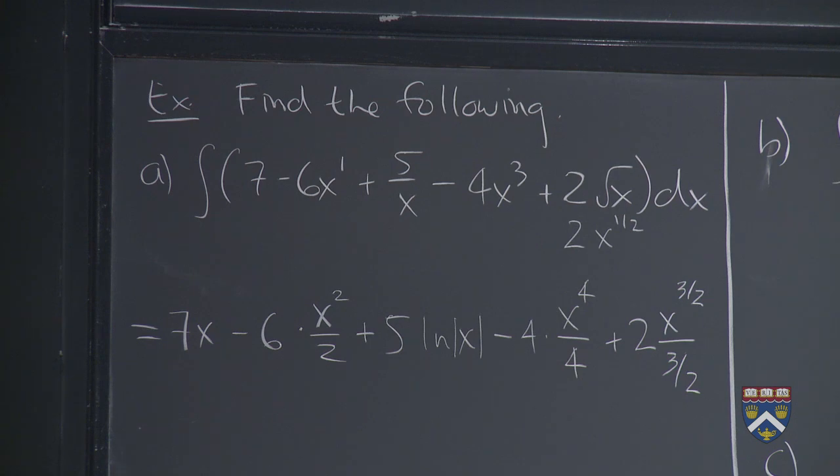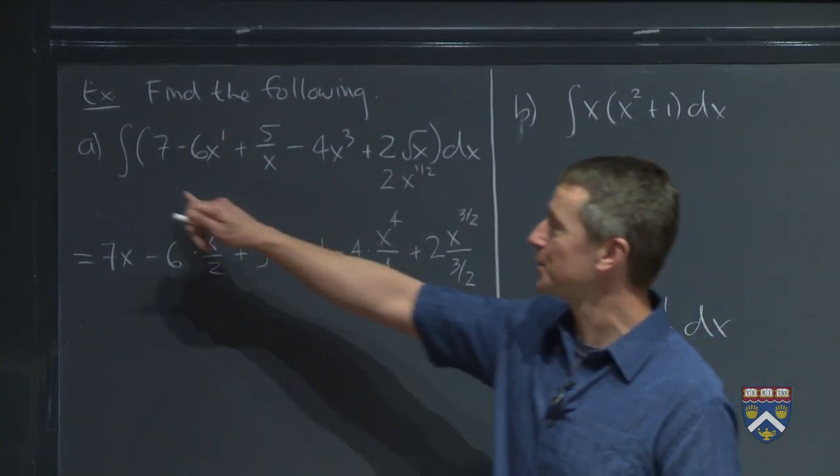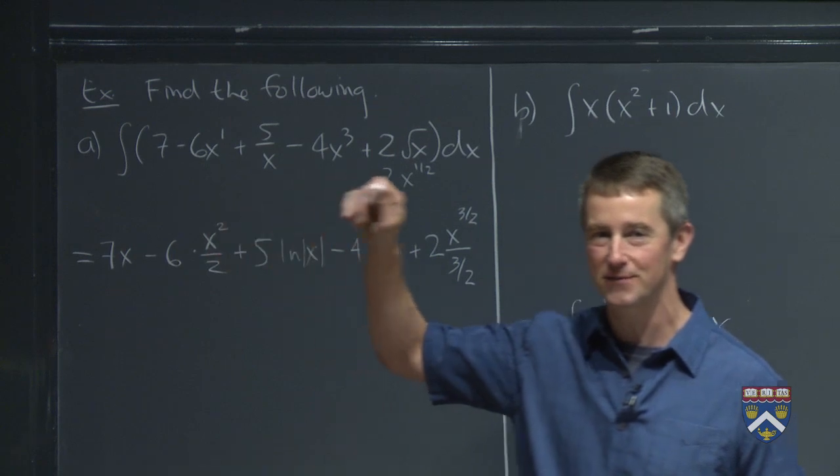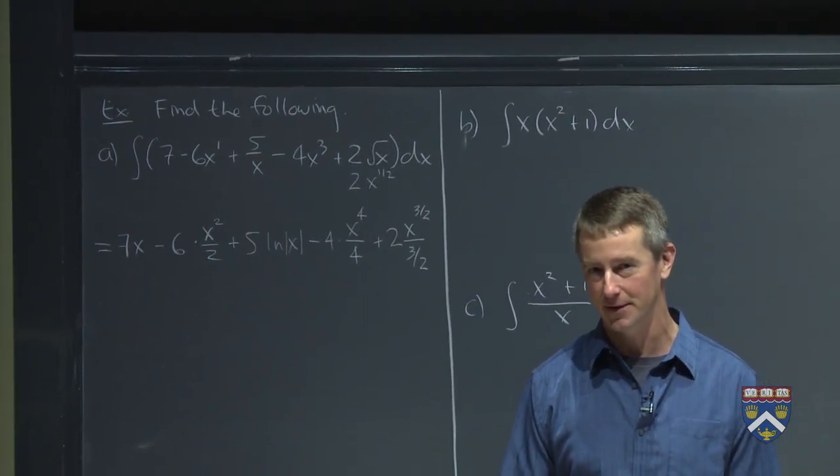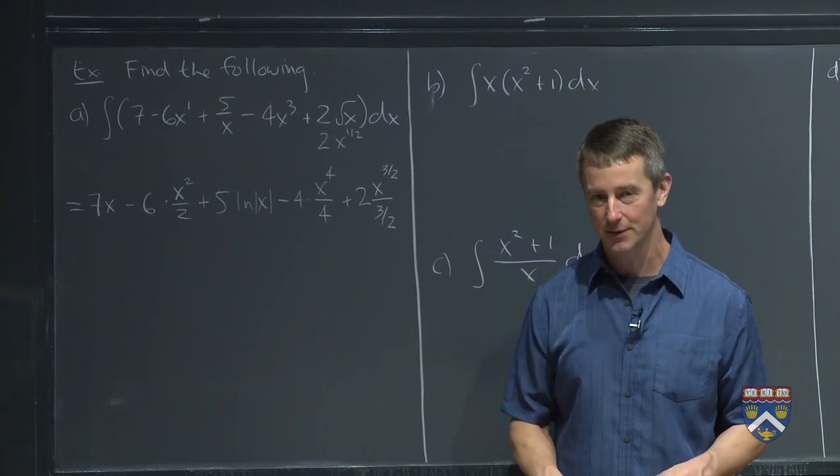And I hope some of you are screaming out at home, what about the, what are we forgetting here? The plus c, right? Because this is telling us, when we write an indefinite integral, it's saying you're supposed to find all of the possible antiderivatives. And there are infinitely many, right? Once you find one, you can shift it up or down by any real number.